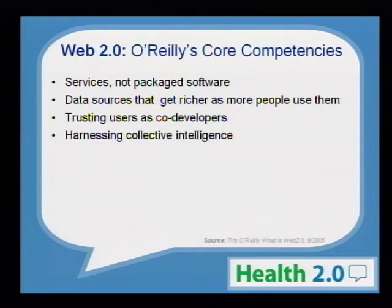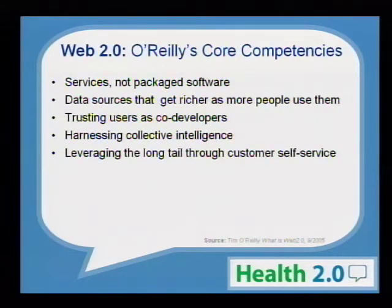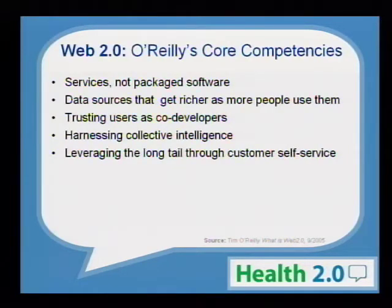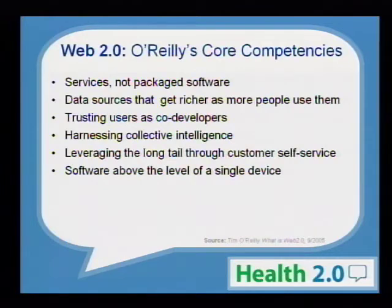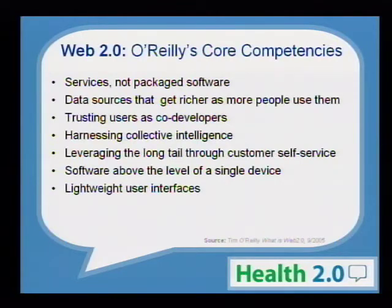Leveraging the long tail through customer self-service — Larry talked about Amazon and what that's done for bookstores. If any single corner bookstore had to have every book that every one of us would want, it would be impossible, but Amazon can do that because of its scale and ability to search and archive information. Software above the level of a single device — an easy example is iPhone, iPod, iTunes: many different interfaces but software that sits above different devices. And the concept of lightweight user interfaces. That was roughly what Web 2.0 was beginning to mean about five years ago.